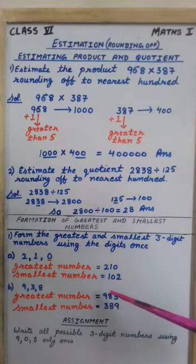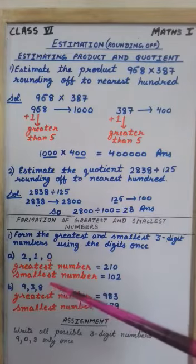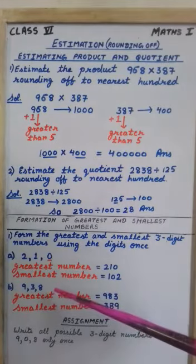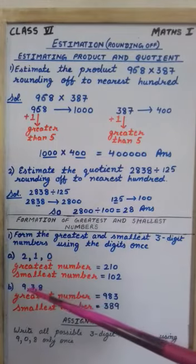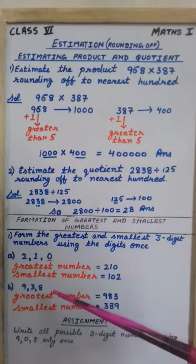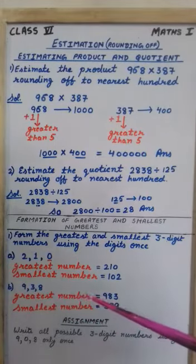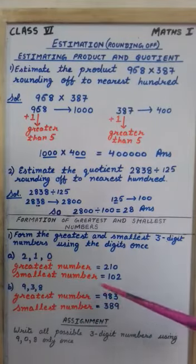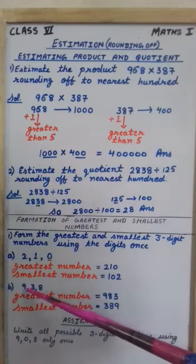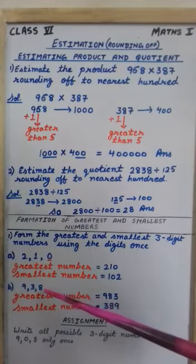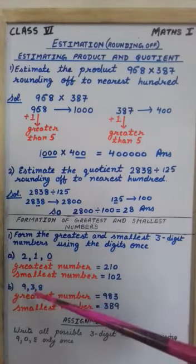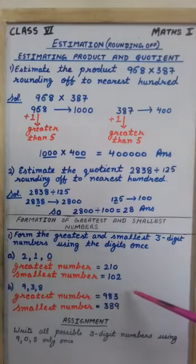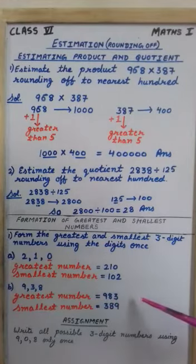Now coming to the second question. The digits are 9, 3, 8. It's a simple one for you. If we are making greatest 3 digit number, we have to take first the greatest digit 9, then 8 and then 3. So my number is 983.